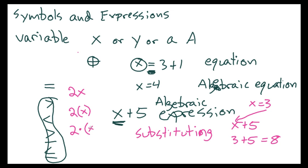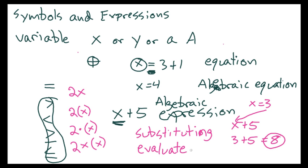In algebra you typically won't see the multiplication symbol written like that because it could be mistaken for a variable. What we did after we substituted was evaluate the expression — that's where the equal sign comes in. After we substituted 3 in for x, we got 3 plus 5 and then we evaluated it to get 8. So another vocabulary word is evaluate, which basically means solve. If you see 'evaluate' in a question, you can solve that equation.